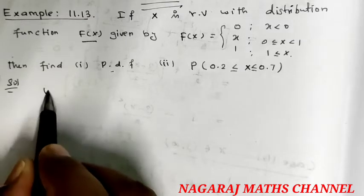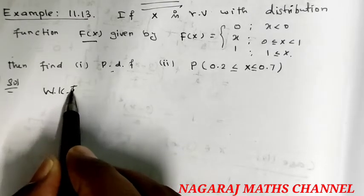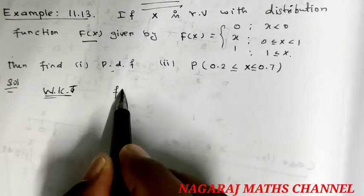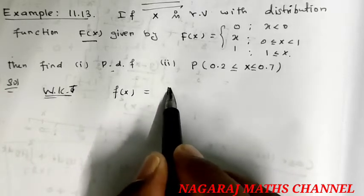Now we know that small f of x can be found by differentiating capital F of x.